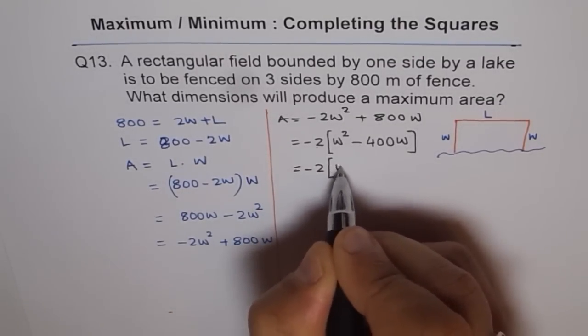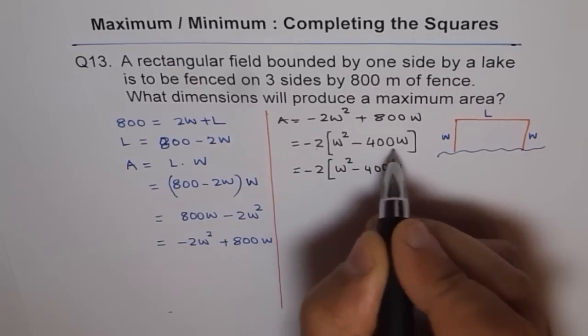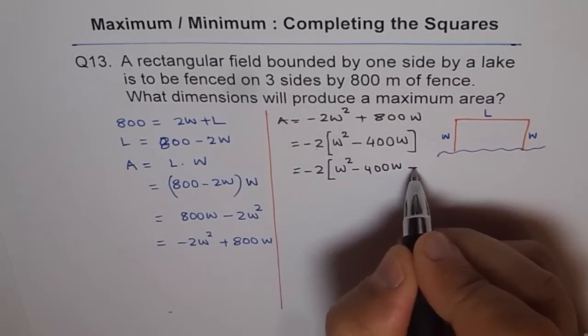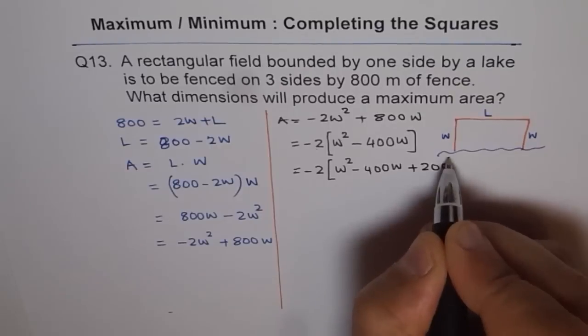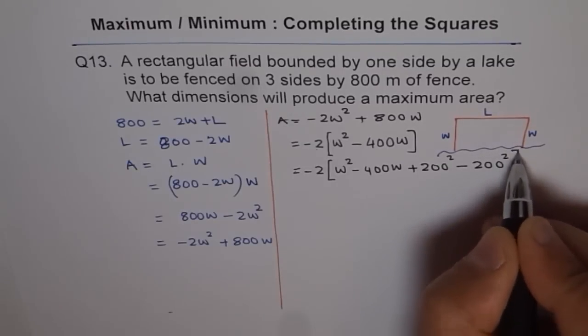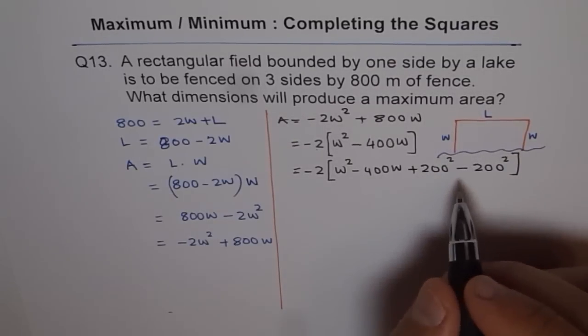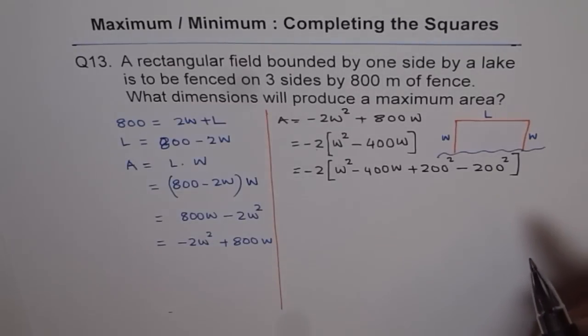So minus 2, W square minus 400W. Half of 400 is 200. So we'll add 200 square and we'll also subtract 200 square. It is like adding 0. 200 square minus 200 square is 0. So that does not affect our equation.